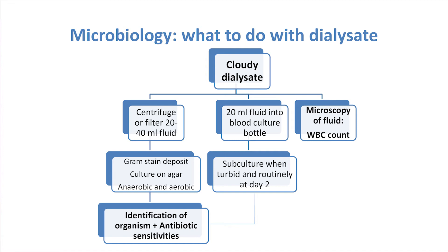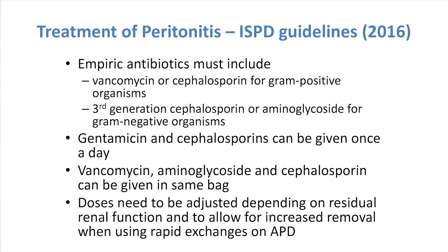In terms of management, you start with the cloudy bag — the patient has to get to somewhere, and we went through different strategies in the workshop. You need to then get a fluid sample sent to the microbiology lab. Ideally, the fluid should go into a blood culture bottle — that is the ISPD recommendation to really increase your return of cultures. Empiric antibiotics must include vancomycin and a first-generation cephalosporin for gram-positives, and a third-generation cephalosporin or an aminoglycoside for gram-negatives. But what you use in your individual centres depends on your microbiology, emphasizing the importance of developing microbiology links when setting up a PD program.